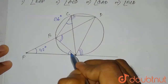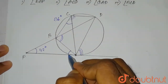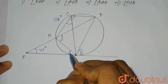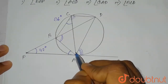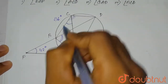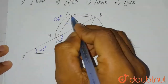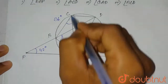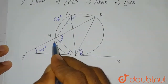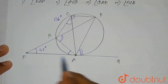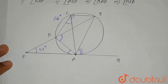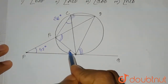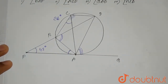That means the angle between the tangent and the chord will be equal to the angle in the alternate segment. So this angle will be equal to the angle made by the chord, that means angle BCA. So the value of angle BAP will be equal to 36 degrees, because it is the angle in the alternate segment theorem.